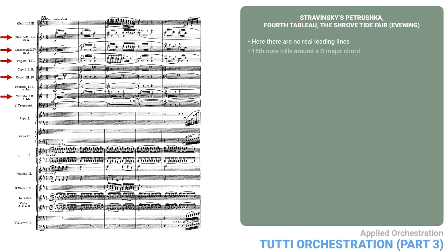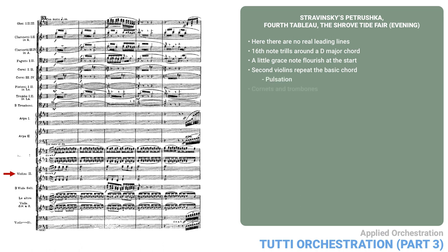The passage starts off with the 16th note trills around a D major chord in the clarinets, bassoons, the horns and trumpets. The first violins and most of the violas have a similar motive, but with a little grace note flourish at the start, as though to trigger all this energy. Second violins repeat the basic chord in eighth notes, emphasizing the pulsation. Cornets and trombones hold on to the D major chord, providing sustained resonance.